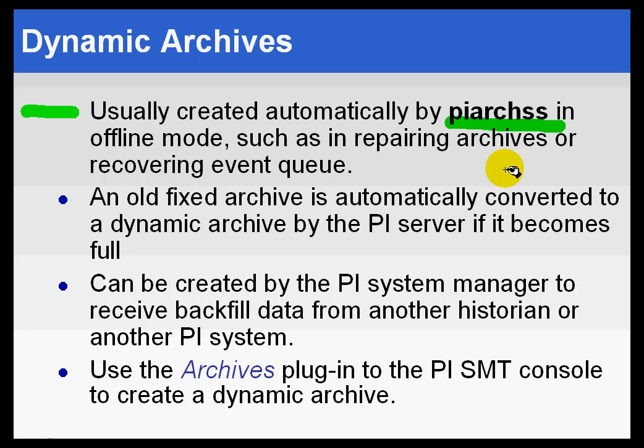What a dynamic archive is, is an archive that simply does not establish its full size or its true size at the time at which it is initialized. When it is initialized, we simply create a primary record for each tag in the system that exists at that point. And then, as we fill it with data, we simply add new overflow records — not from the back of the archive file, from the end of the file, but we just add new primary or new overflow records to the front of the file.